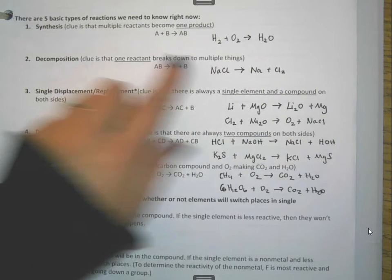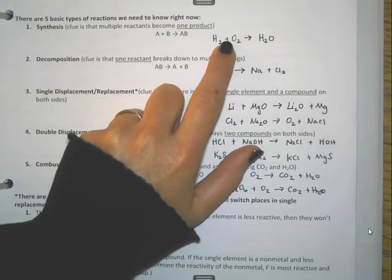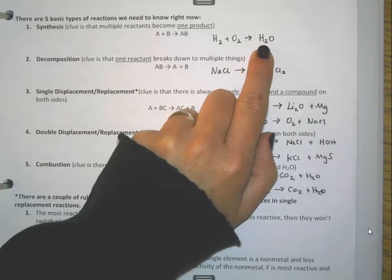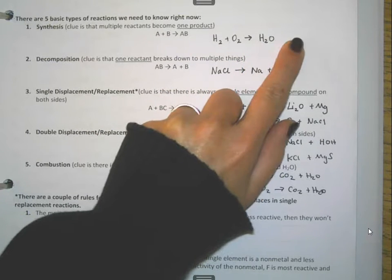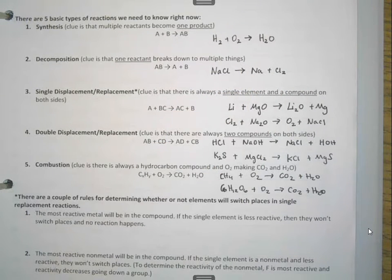When I look at this example right here, I see, first of all, the plus sign. The plus sign tells me that I have two reactants. Over here on this side, this is my product side, I only see one thing. There's no plus sign, there's nothing else over here. There's one product. What that tells me is that that is a synthesis equation.